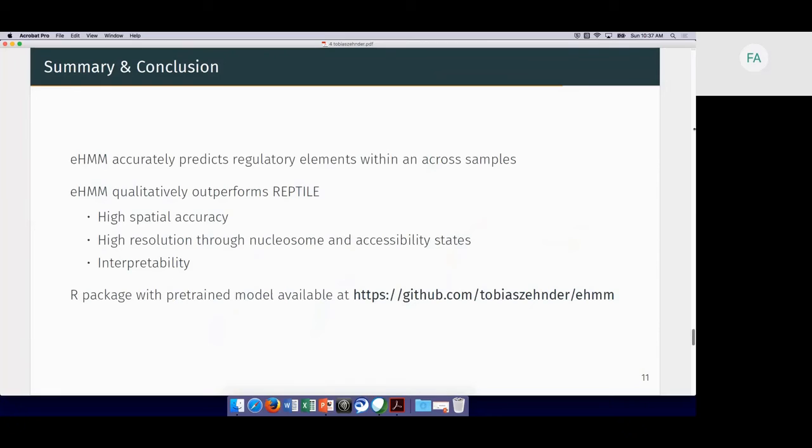On that note I want to close and summarize that eHMM accurately predicts regulatory elements within and across samples, and that we qualitatively outperform by providing high spatial accuracy, high resolution by having nucleosome and accessibility states, and a high level of interpretability. We provide the method at my GitHub page and you're very welcome to use it, also if you're working with human data, since we have this normalization step involved this should perform pretty well.